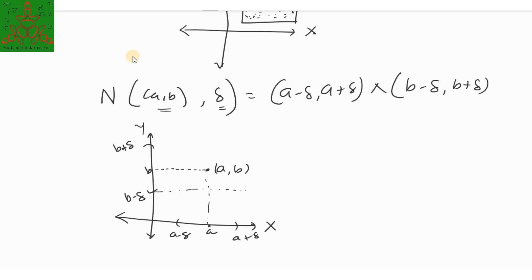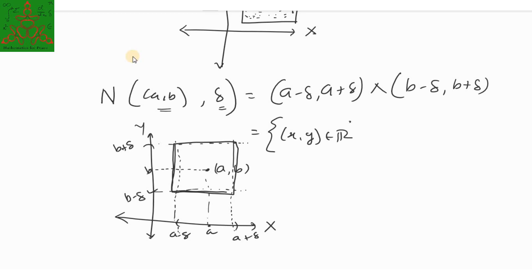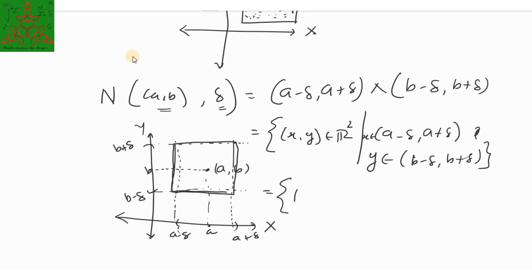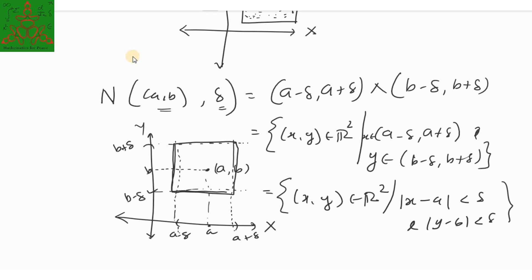Whatever square is formed and bounded by the four lines x = A minus delta, x = A plus delta, y = B minus delta, and y = B plus delta — that square is called the neighborhood of point (A, B). It is also written as the set of all (x, y) in R² such that x belongs to (A minus delta, A plus delta) and y belongs to (B minus delta, B plus delta), or equivalently such that |x minus A| < delta and |y minus B| < delta.